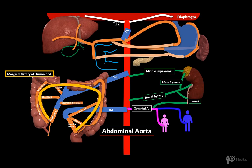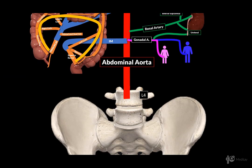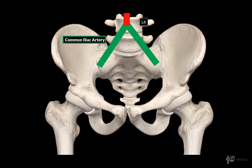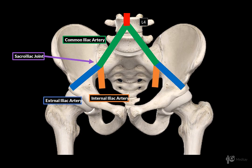As you know, the abdominal aorta will continue downwards to approximately the fourth lumbar vertebrae, and then it will divide into what is called the common iliac arteries. They will continue to approximately the sacroiliac joint as you see here, and then further divide into the external iliac and the internal iliac arteries.